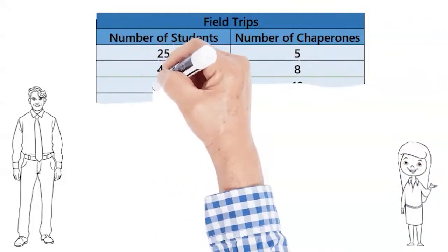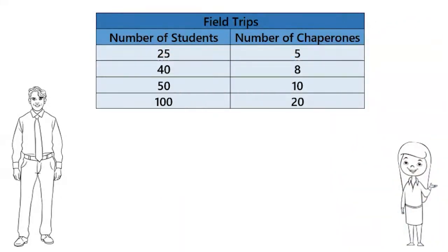What can we tell from the information in the table? On the field trip with 25 students, there were 5 chaperones. That means 25 divided by 5 equals 5 students for every one chaperone. Good.